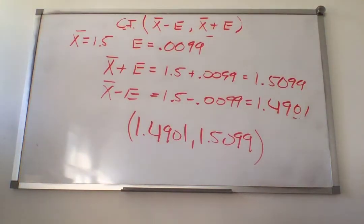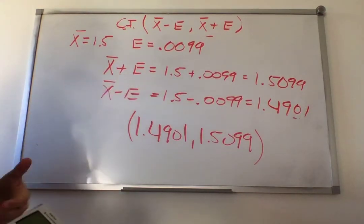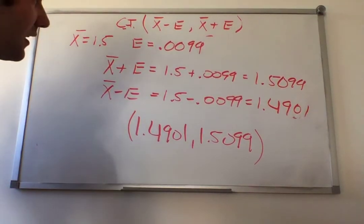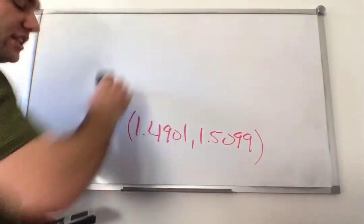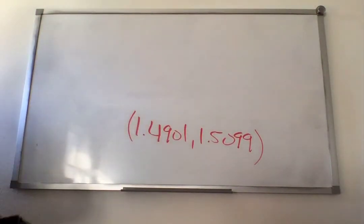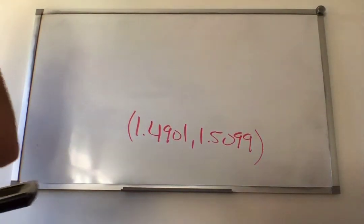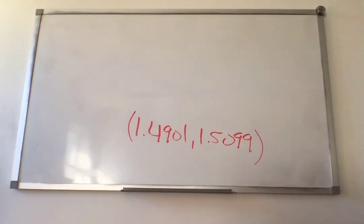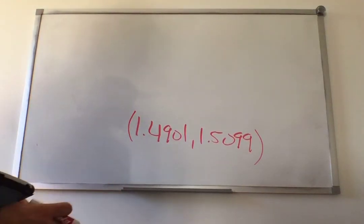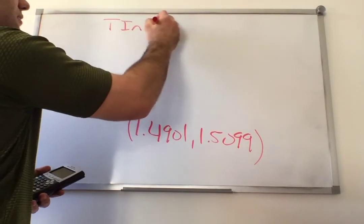As you can see, this was very much like the previous section. The only difference is that for calculating the error formula, we use the t-distribution. Just like in the previous section, they can give you the interval and ask you to find the point estimate using the midpoint, or ask for the error. Not only that, your calculator has a way to do this confidence interval for you — just like the z-interval, there's a t-interval.